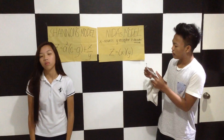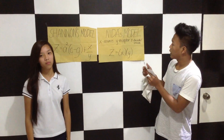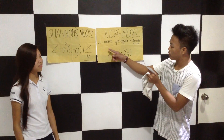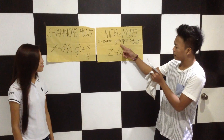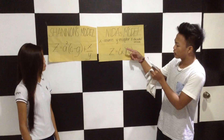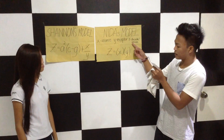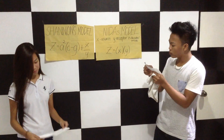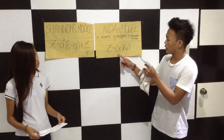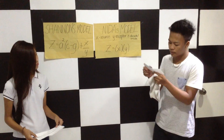In NIDA's model, the source will be X, the receptor will be Y, and the decoding and encoding will be Z. The equation will be Z is equal to X times Y.